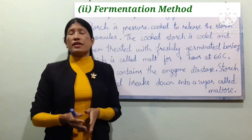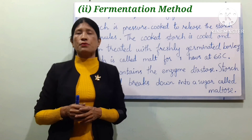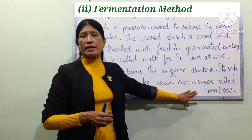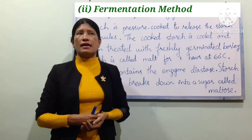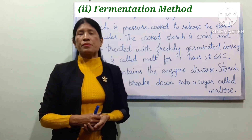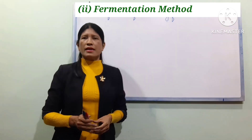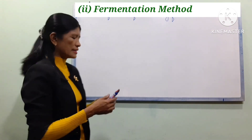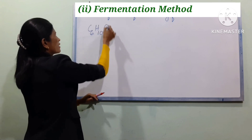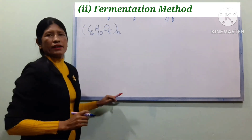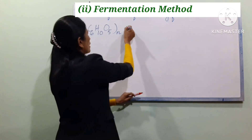In the first step, the enzyme diastase acts on starch. The starch formula is (C6H10O5)n. This reacts with water (H2O) and the enzyme diastase converts it to maltose.